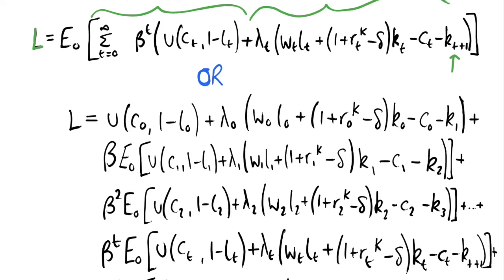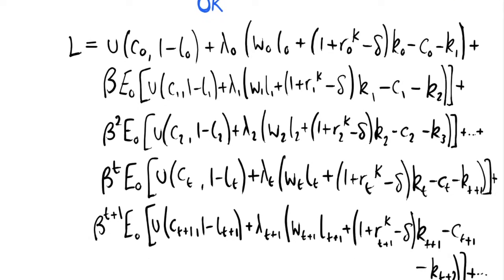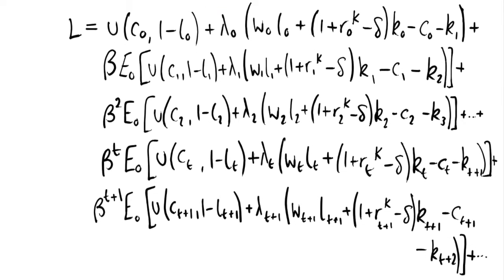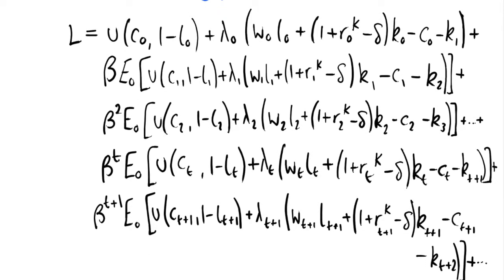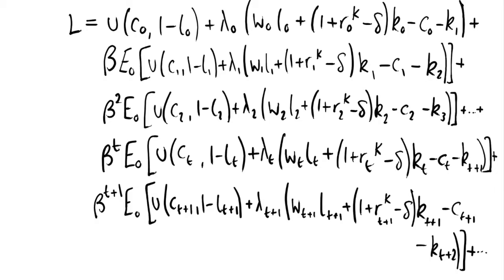I can expand all of this out and write the Lagrangian not as an infinite sum but as an infinite number of terms all added together. I've done this just to add a bit of intuition as to what happens — we discussed this in the previous video — but just to include the constraints in there as well.